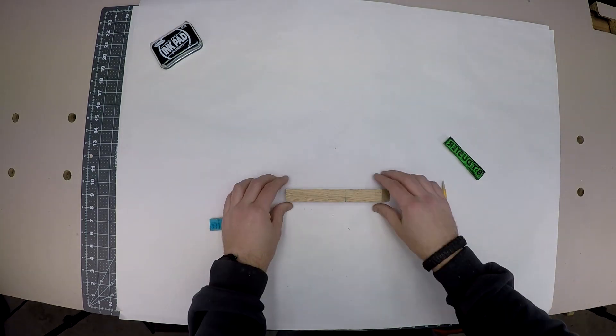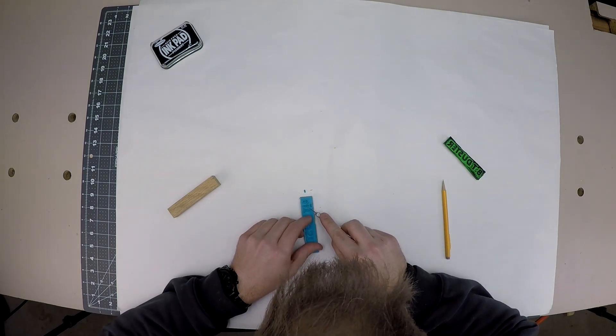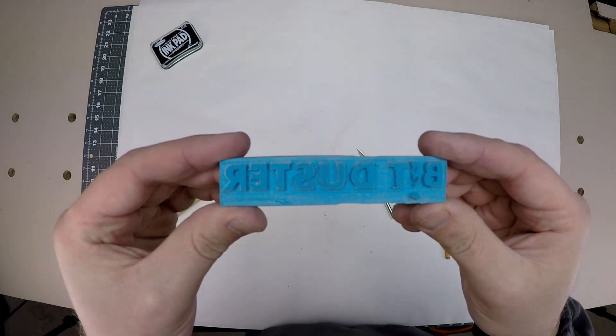I made a backer for the stamp using a piece of scrap oak. Next I use a scalpel to cut slits in the letter I to give it the effect of a drill bit.